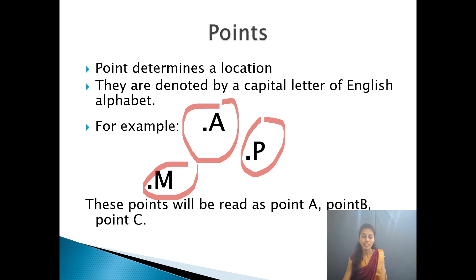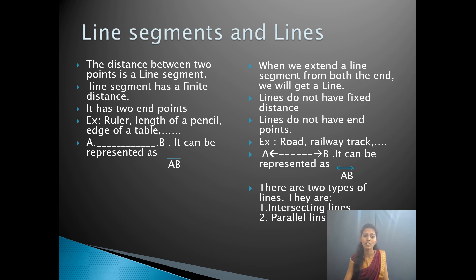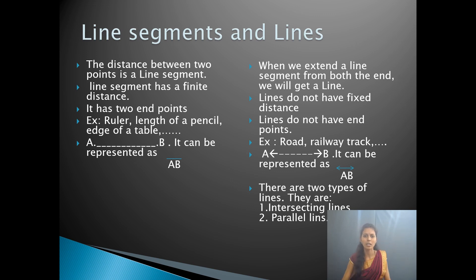When we join two points, we get a line segment. A line segment is the distance between two points, and it has a finite distance. The best examples for a line segment are the edge of a table, the length of a pen, the length of a pencil, the length of our screen — everything we can measure. This measurable distance is the best example for a line segment.